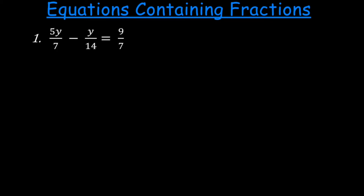Let's dive right into some problems. We want to find the value of y. We need to find the lowest common multiple. The denominators are 7 and 14, so the lowest common multiple is 14. The next step is to multiply the lowest common multiple by each of these terms.